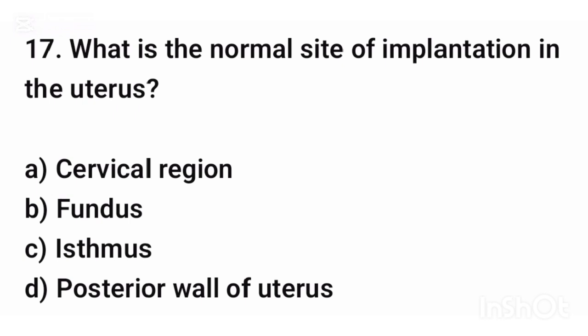Question number seventeen. What is the normal site of implantation in the uterus? The correct answer is option D: Posterior wall of uterus.